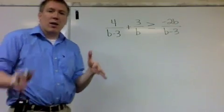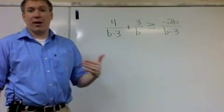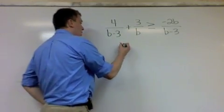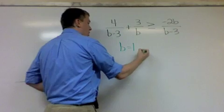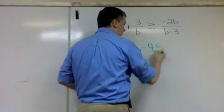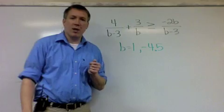So the first step is identical to the last one where it said equal to: find out where it actually equals. Pretend it's equal. From the last step we got when it's equal, b is 1 or negative 4.5. So those are my two answers for when it's equal to.